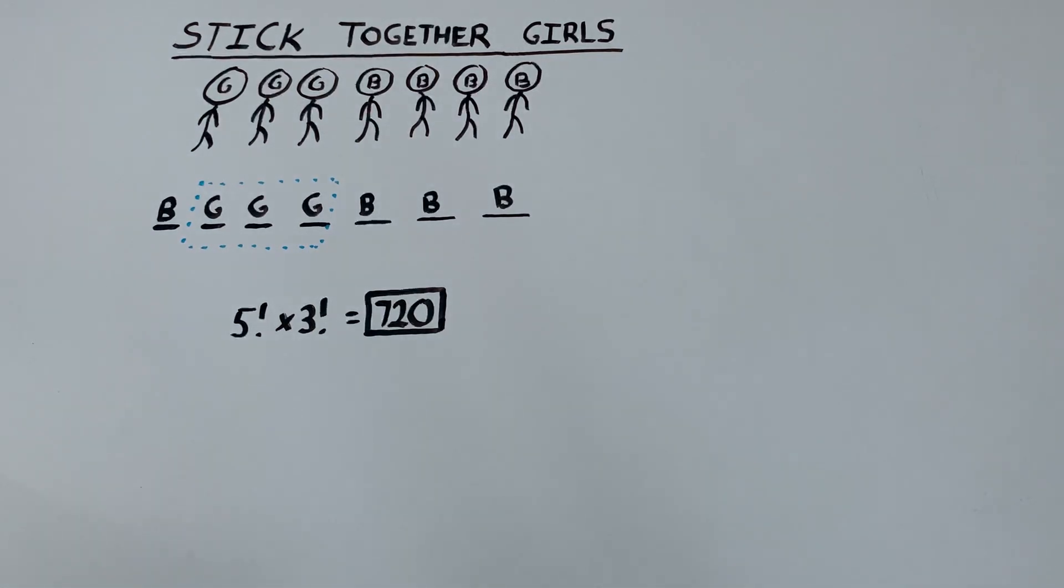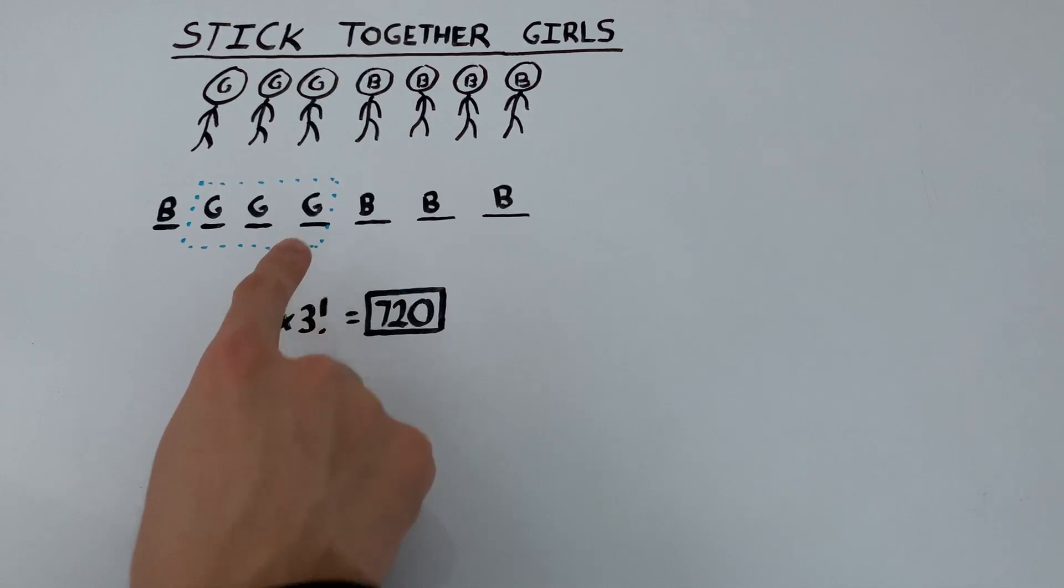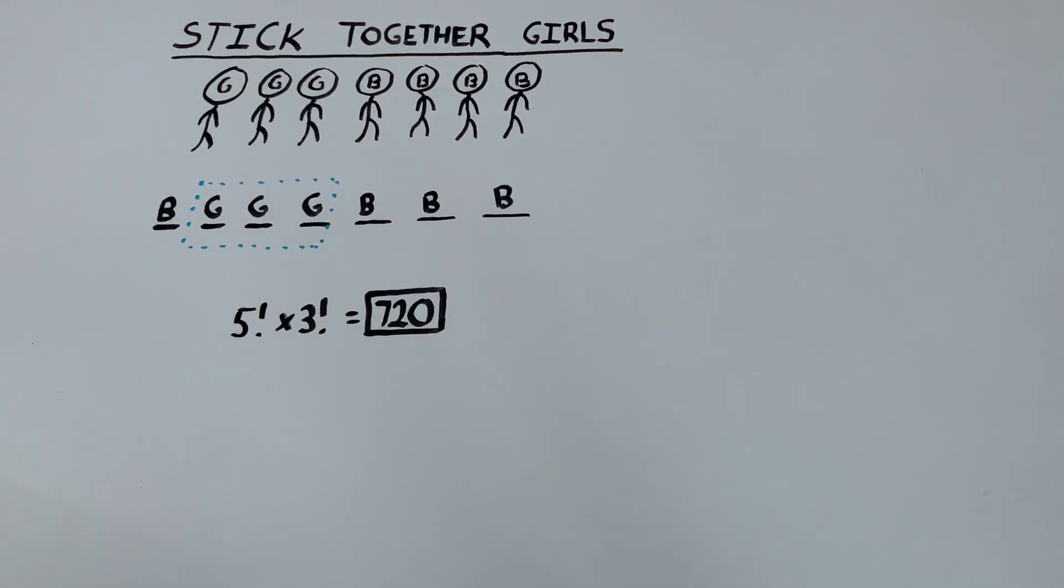So this strategy of grouping things into blocks is very common in problems where you have to keep things together. Now, if this example was a little confusing, don't worry. We're going to get some more practice with another example where we have to keep many objects together once again. So let's have a look at the next problem.